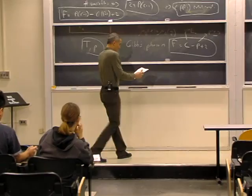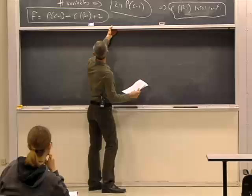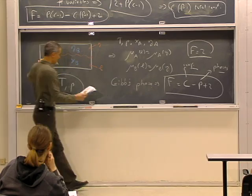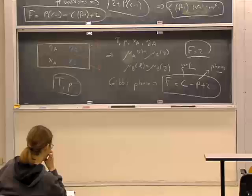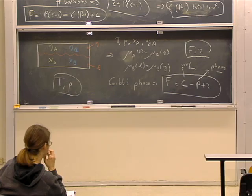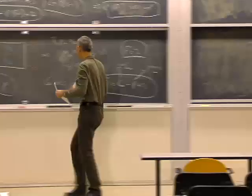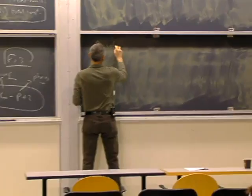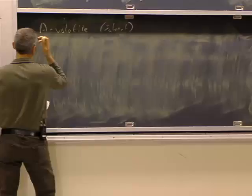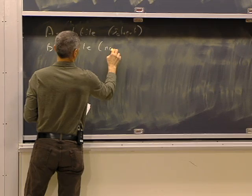So let's move on to ideal solutions. The first case we're going to look at is where A is a solvent and it's volatile, and B is a solute which is non-volatile. So let's take the first case: A volatile — the solvent could be water — and B is the non-volatile solute. This could be sugar, like sweet water.